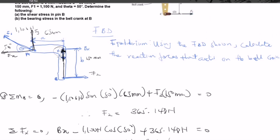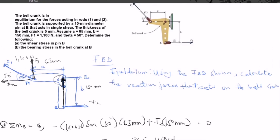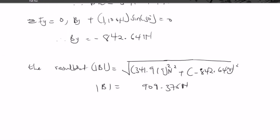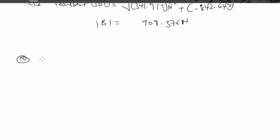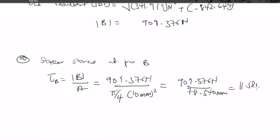Now we find the shear stress in pin B. The pin diameter given is 10 millimeters. The shear stress at pin B equals the resultant force divided by the cross-sectional area: τ = 909.376 / (π/4 × 10²). This gives a shear stress of 11.58 megapascals.